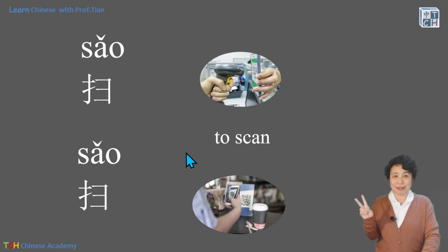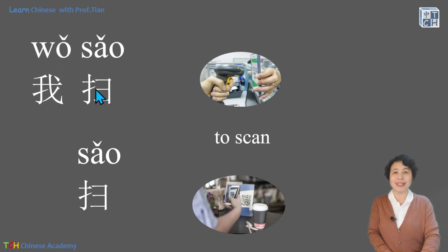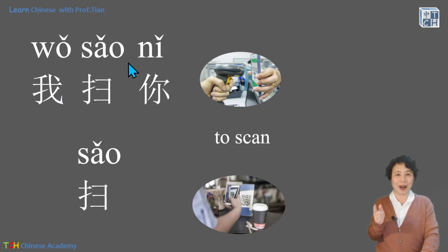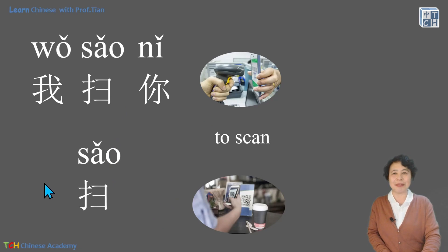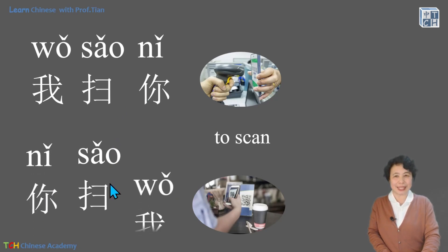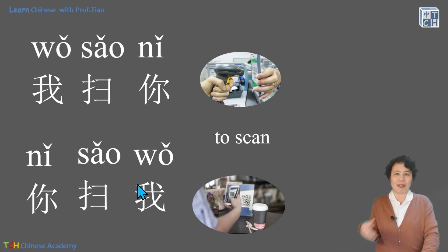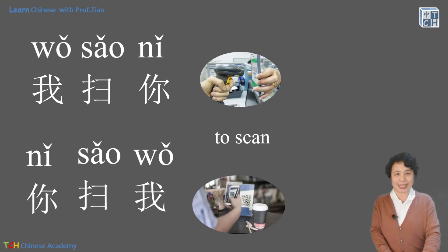There are two ways we scan. The first one: 我扫你, meaning I will scan you. So the waiter or waitress will say, okay, show your QR code, I'm going to scan you. And sometimes you have to scan their code, so you say 你扫我 — you scan me. Both 我扫你 and 你扫我 are very common. It just depends on where. So you need to know how to do both.